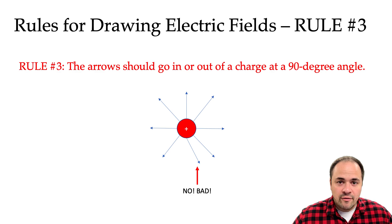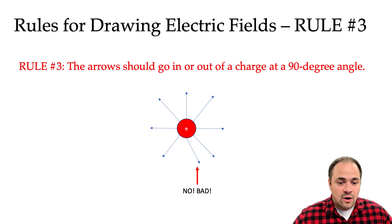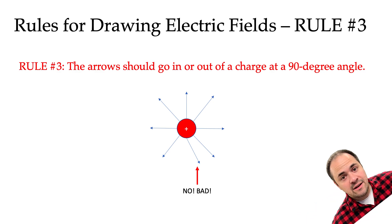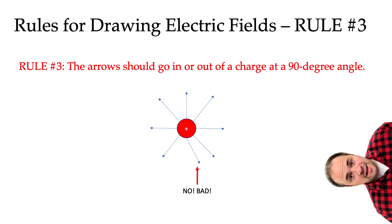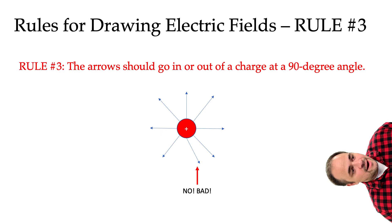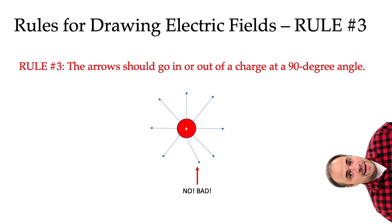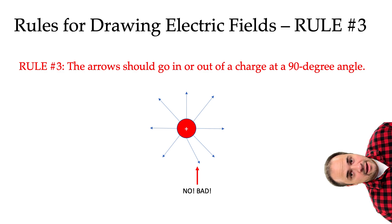Speaking of arrows and how to draw them, rule number three is that arrows are always going into or coming out of a charge at a 90-degree angle. All of those arrows look just fine except for that bottom one, which is a little crooked — that is not a 90-degree angle coming from the charge. So in order to correctly draw these diagrams, you need to equally space your arrows and make sure that they are coming out of or going into the charge at a 90-degree angle.